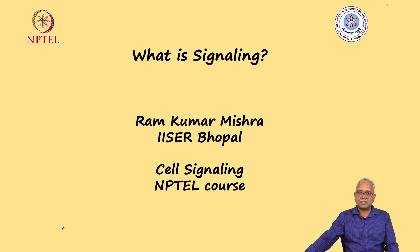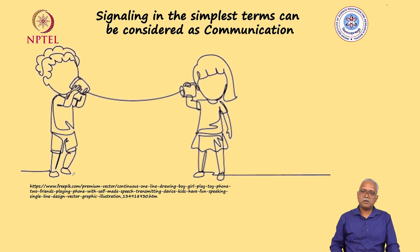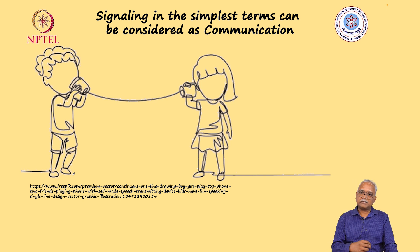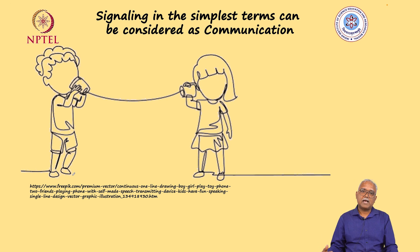Let us start with the idea of what signaling is. If we understand what exactly signaling is, we realize that it is nothing but a communication. It is the way by which two entities communicate with each other. An entity sends a signal, the other entity receives the signal, processes the signal, and then responds to the signal.